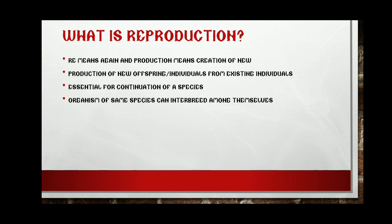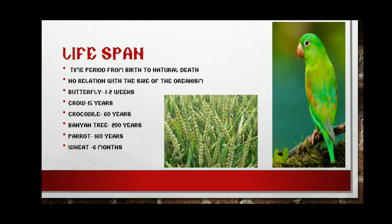What is lifespan? Lifespan is the period from birth to the natural death of a species. If an organism dies accidentally or by other means, that time period will not count as lifespan. Now, what is the relation between size and lifespan? Basically, there is no relation between size and lifespan. A small organism can have a very long lifespan, or it can also have a very short lifespan.